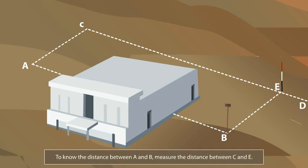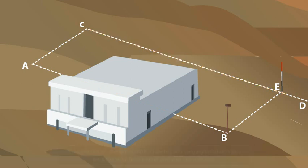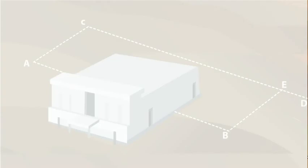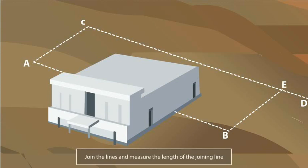You can see that AB is equal to CE. So, to know the distance between A and B, just measure the distance between C and E. Remember, to overcome an obstacle to both chaining and ranging on a line, run two perpendicular lines of equal length, one before and one after the obstacle. After that, join those points and measure the length of the joining line.